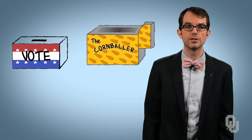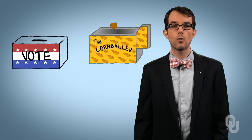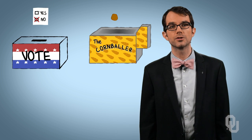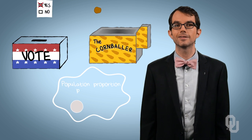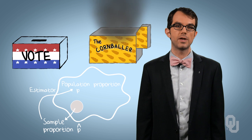And if we're interested in learning more about the proportion of a population that falls into one of two categories — for example, the proportion that will vote yes on a particular ballot initiative, or the proportion of defective cornballers produced in the US — we use the proportion found in a sample, p-hat, as an estimator of the population proportion, p.